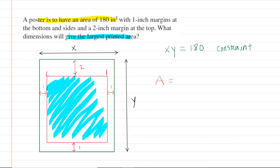could be represented not by X, but by X minus 2. The reason it has to be minus 2 is because we have to trim off 1 inch on this side and then 1 inch on that side. So we're going to have X minus 2 for the length of the printed area.